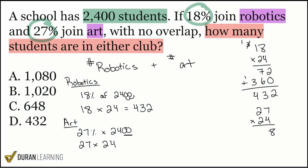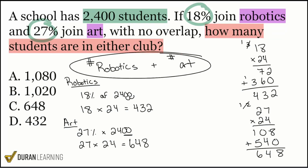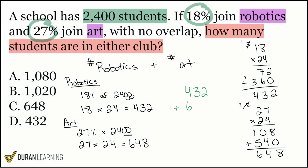7 times 4 is 28. 2 times 4 is 8, carry the 2 is 10. Then bring down a 0. 7 times 2 is 14, carry the 1. 2 times 2 is 4, carry the 1 is 5. So that becomes 8, 4, and 6 — so 648. Now we take robotics and art and add them together, exactly what we said we would do. 432 plus 648: 2 plus 8 is 10, carry the 1. 3 plus 4 plus 1 is 8. 4 plus 6 is 10. The total is 1,080 between robotics and art.